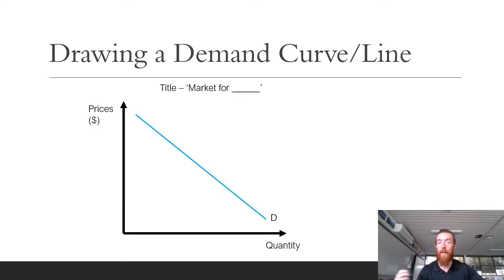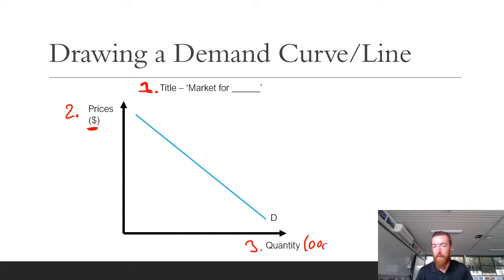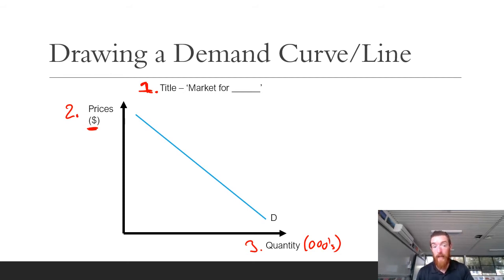To draw a demand curve and get full marks on a demand diagram, you need multiple things: a title — always 'market for' whatever good or service; your y-axis labeled 'price,' usually with the unit in dollars; your x-axis labeled 'quantity,' often with units like thousands; and your demand curve, which slopes downwards because as price decreases, quantity demanded increases, labeled with a small 'D' at the end.